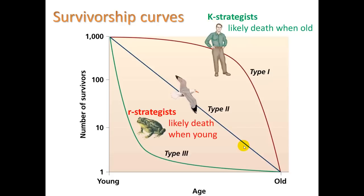We'll end with survivorship curves. On the horizontal axis is age from young to old; on the vertical axis is number of survivors from one to a thousand. R-strategists like frogs — starting with a thousand eggs — lose most individuals in the first few years, but those that survive do well until old age. K-strategists like humans have a different curve: most babies survive when cared for, and death increases at older ages. Type 1 (K-strategists) means likely death when old; Type 3 (R-strategists) means likely death when young. Type 2 means an equal probability of dying at every age.